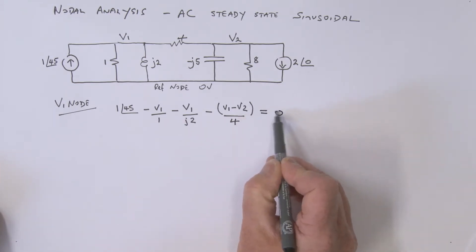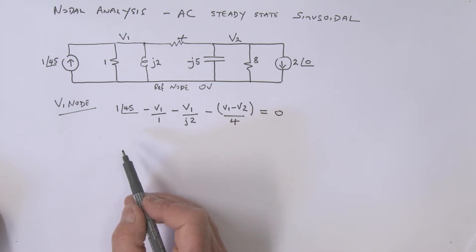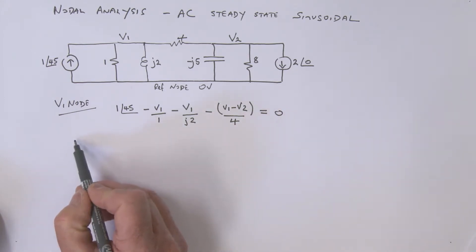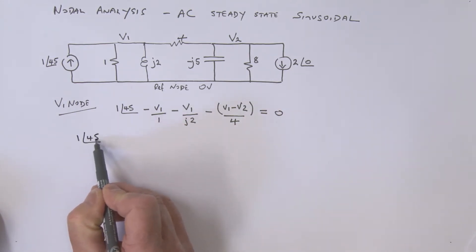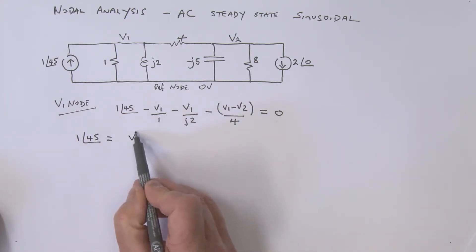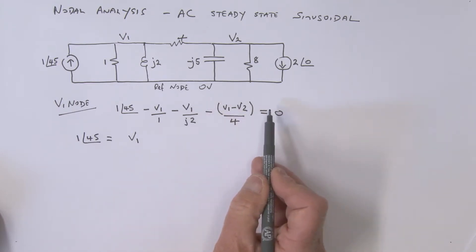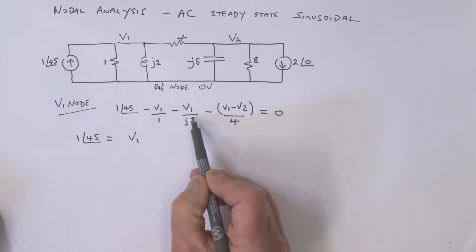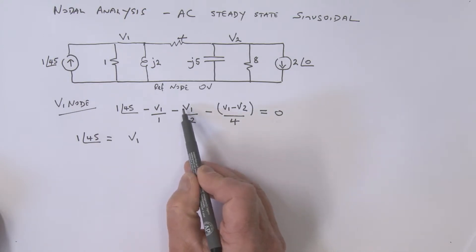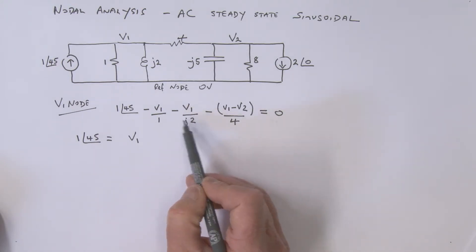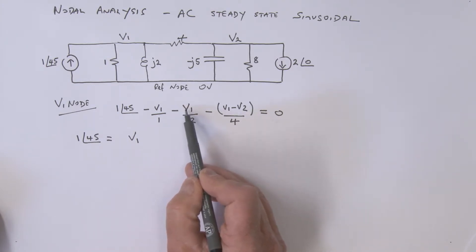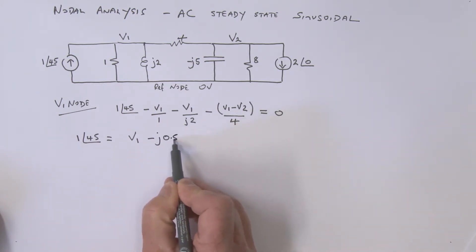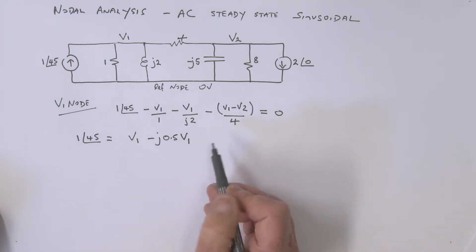All of that is equal to zero. Taking terms to the other side, 1 at an angle of 45 equals v1. Bringing the inductor term over, 1 over j2 becomes 1/2 = 0.5, and taking j to the numerator gives minus j, so that term becomes minus j 0.5 v1.